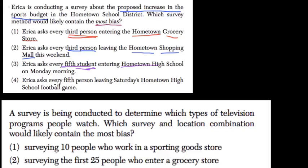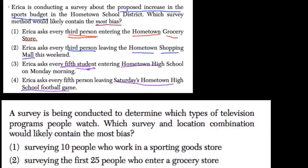Last, we have Erica asking every fifth person leaving Saturday's hometown high school football game. This one is also pretty biased because you're asking only people going to the high school football game — people with school spirit. If they're there for the game, they're related to the school and its activities, and they know that the budget will affect their football team. Those people will most likely support a budget increase. So that's your most biased option right there.